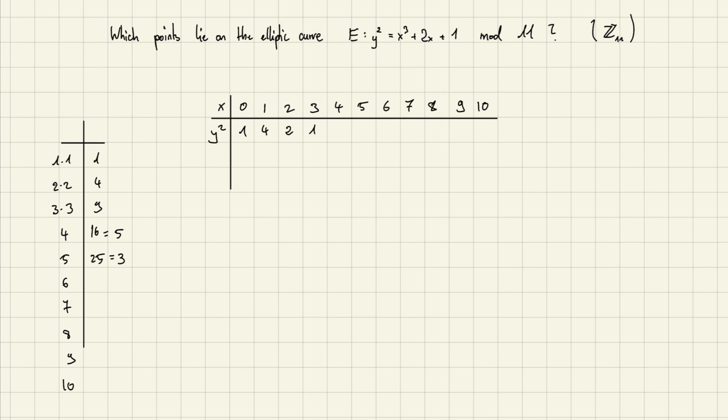It's fairly simple to do this in your head. Then we get 36, 49, 64, 81, and of course 100, which is 99 plus 1, so the mod 11 is 1. Here it's 4, here it's 9, 5, and 3.